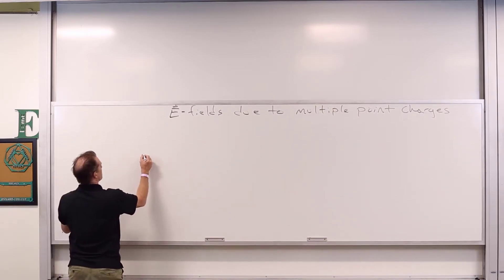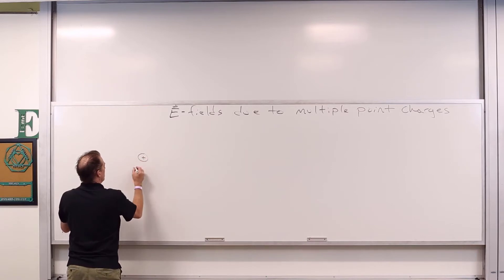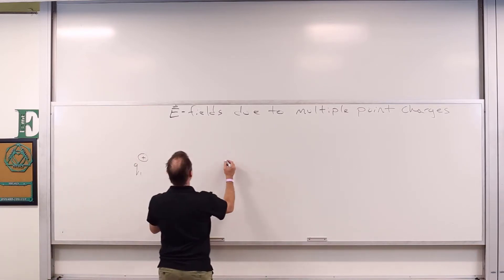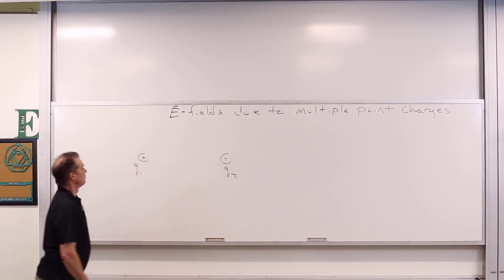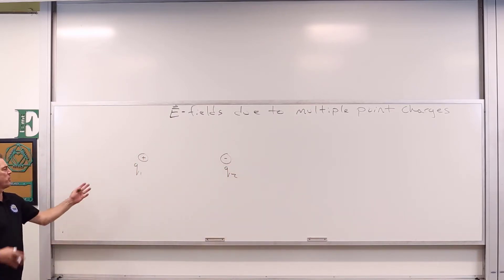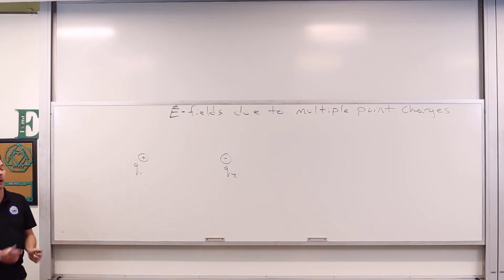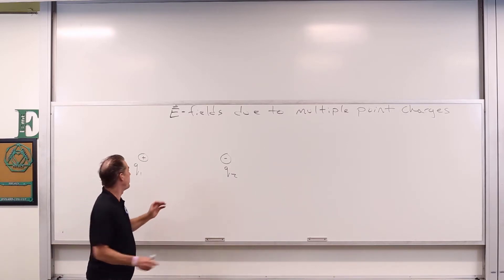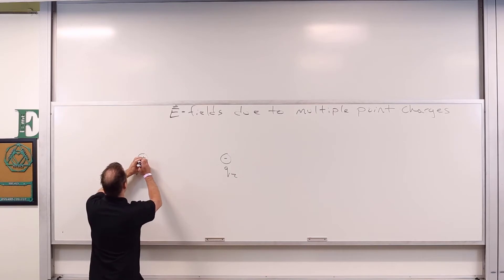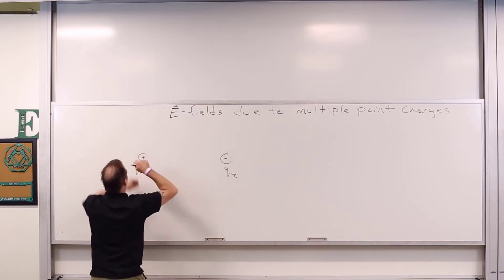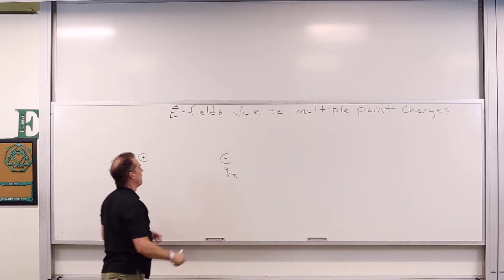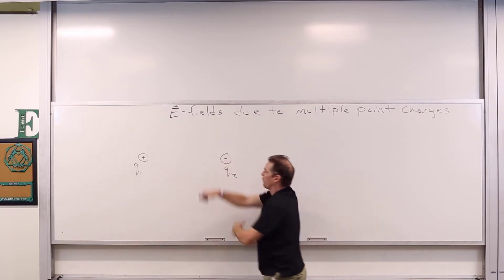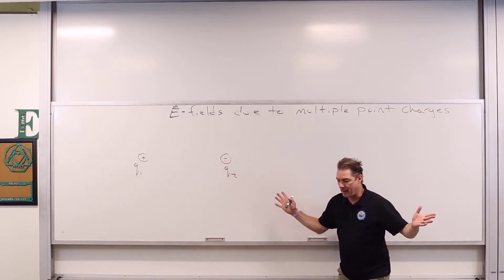Let's say that we've got two charges: Q1 and Q2 — two point charges. These point charges have some amount of charge. We're saying one's positive and one's negative, and they're separated by some distance. We know that individually, each of these charges produces its own electric field. The electric field due to this positive point charge is radially outward, while the electric field due to this negative point charge is radially inward.